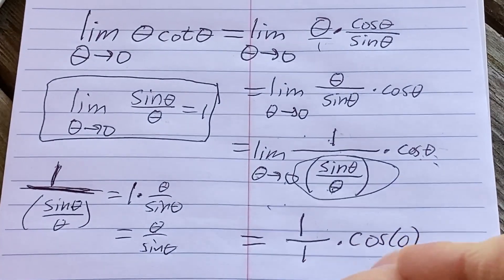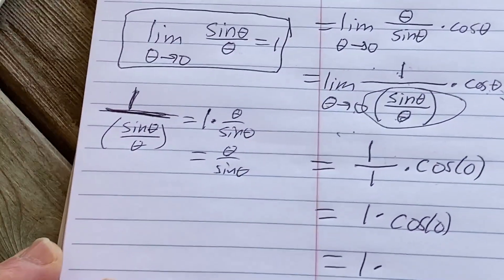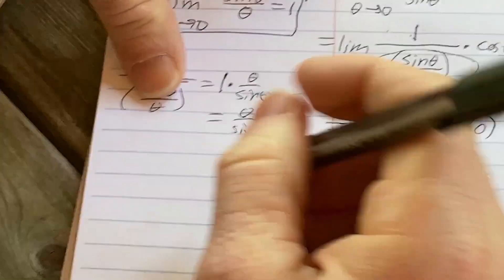So we get one times the cosine of zero. So one times, so what is the cosine of zero? Let's think about that, let's just backtrack why not.